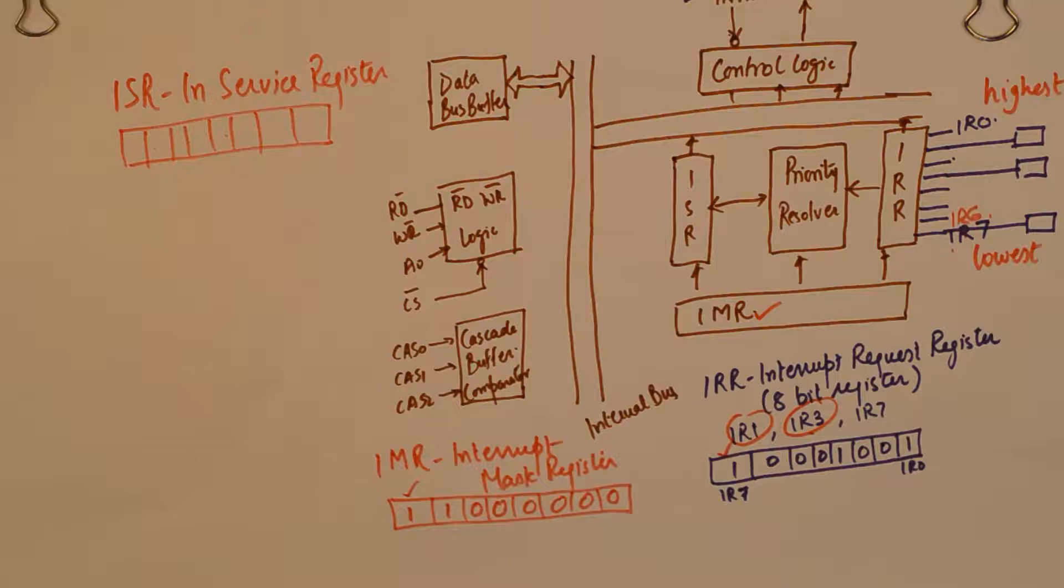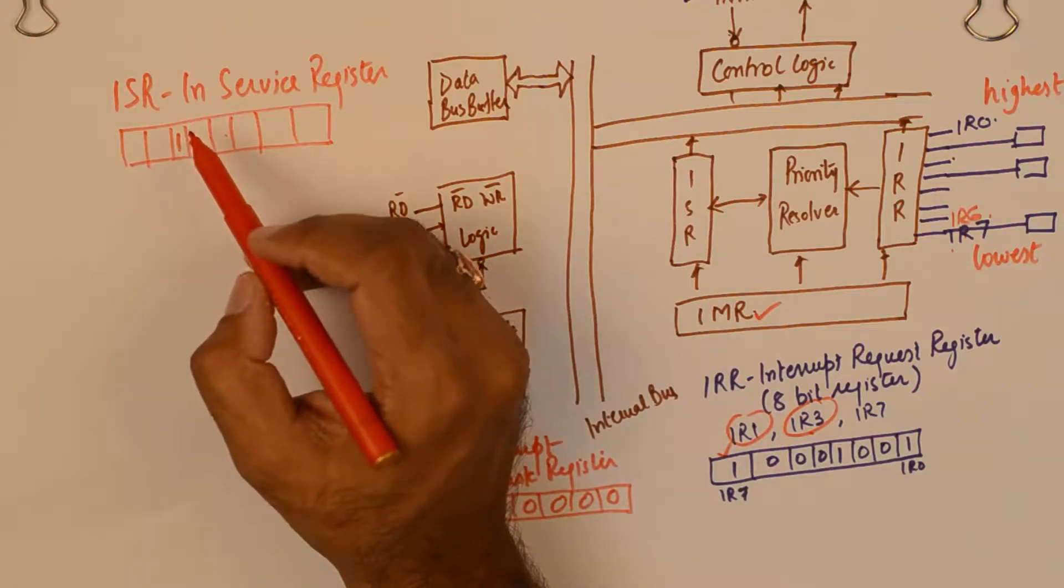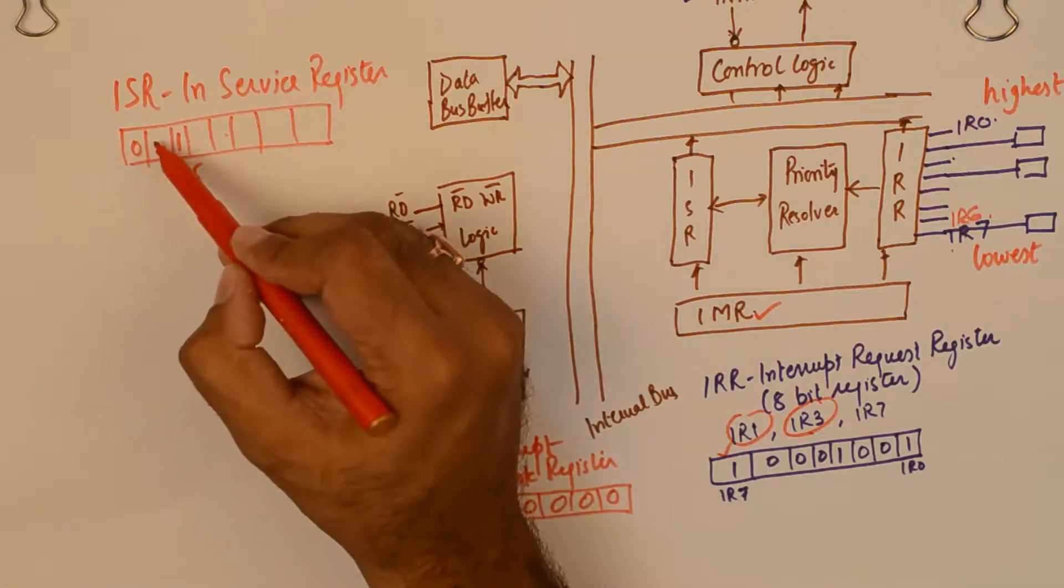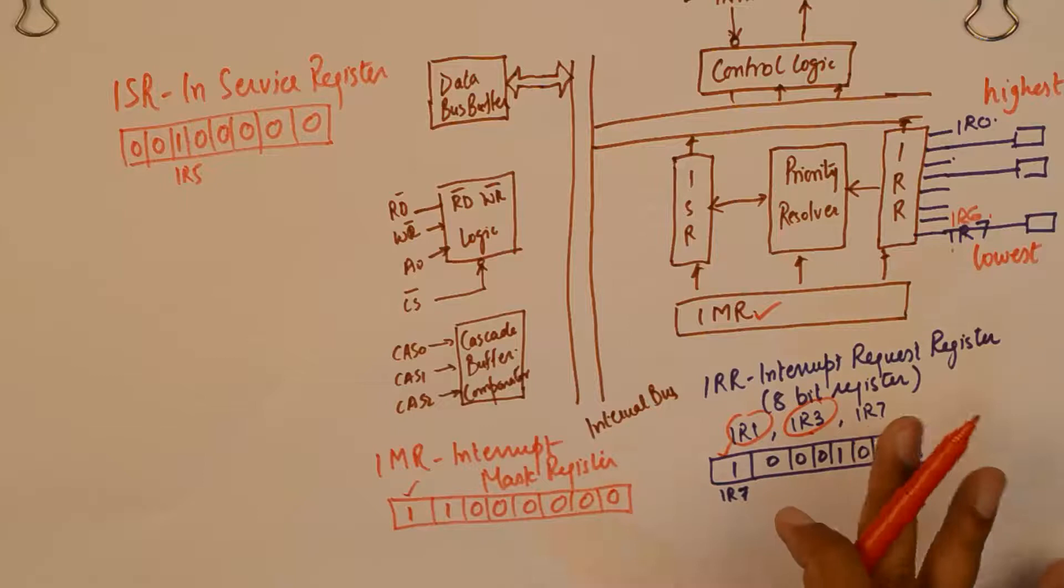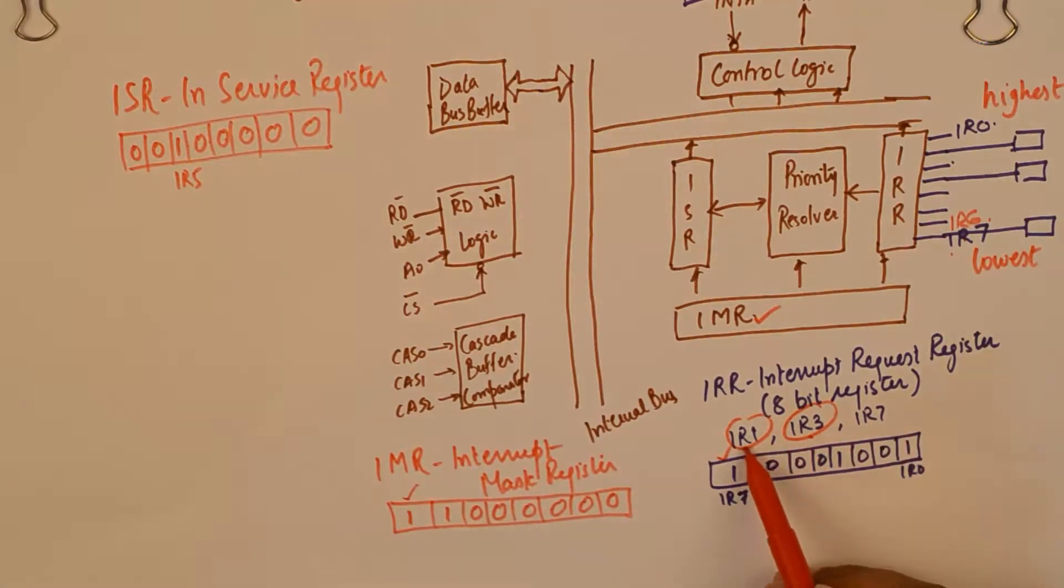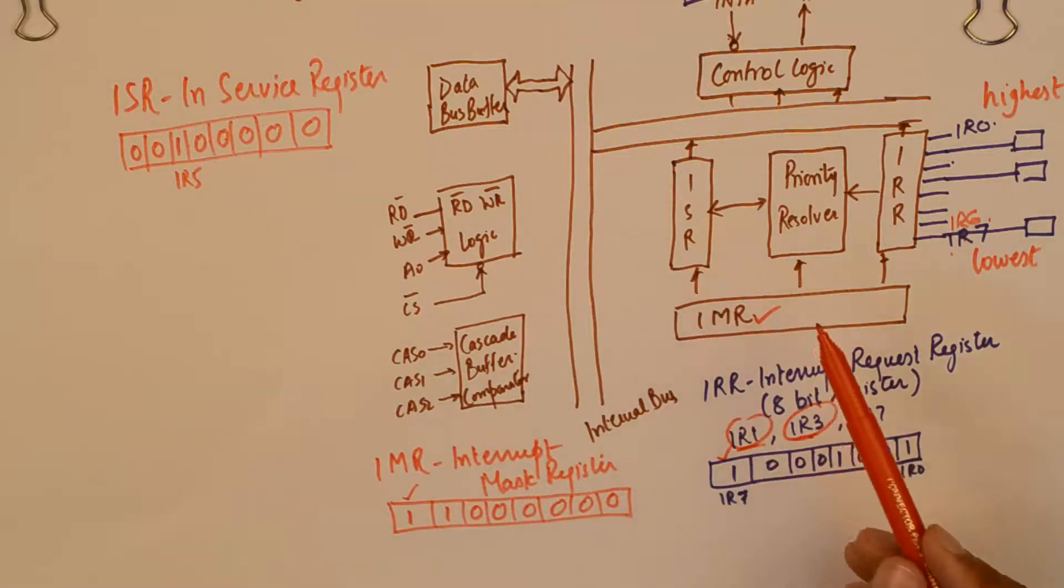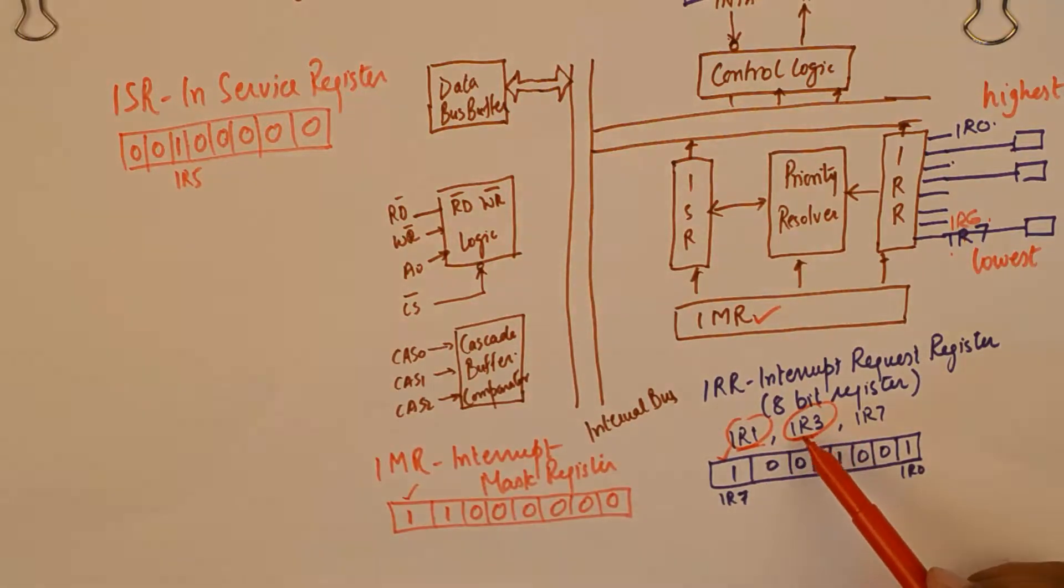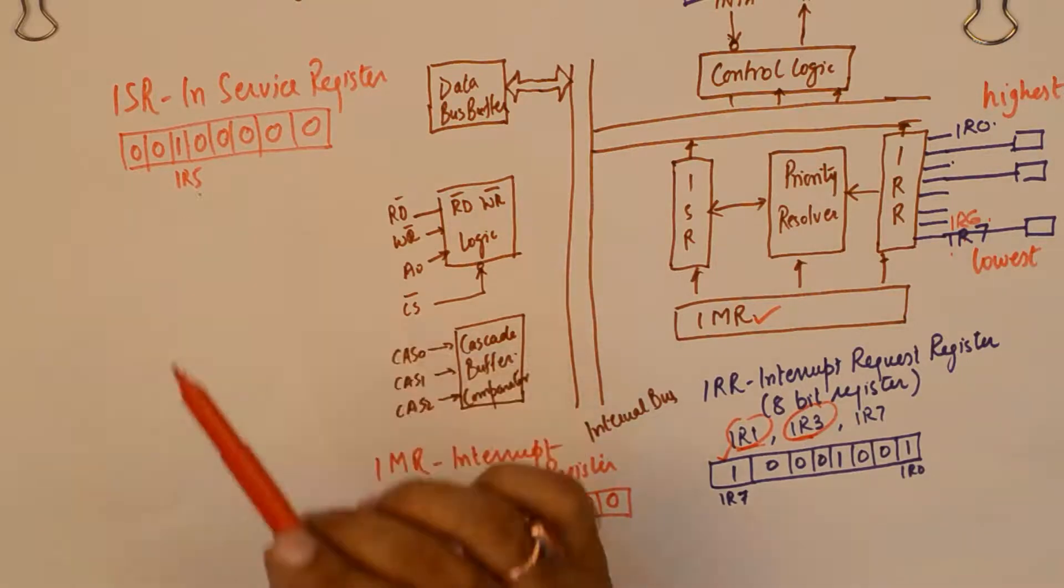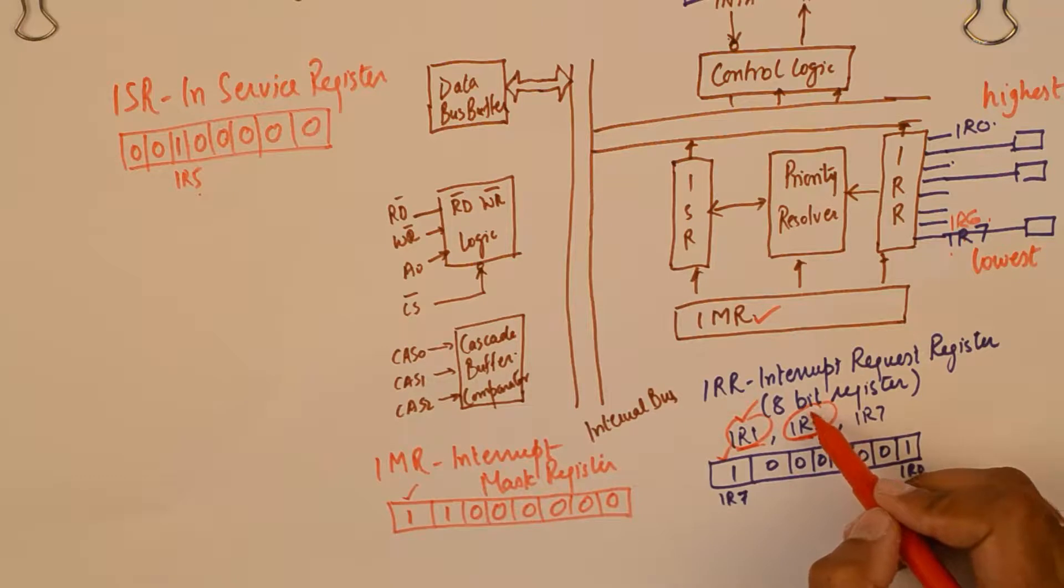Now if we see a 1 here, a 1 in this position suggests that IR5 is currently being serviced. And the case study that we are following suggests that two higher priority interrupts than IR5 are received which are eligible to be serviced. So priority resolver will see that IR5 is currently being serviced but a higher priority interrupt has requested the service.